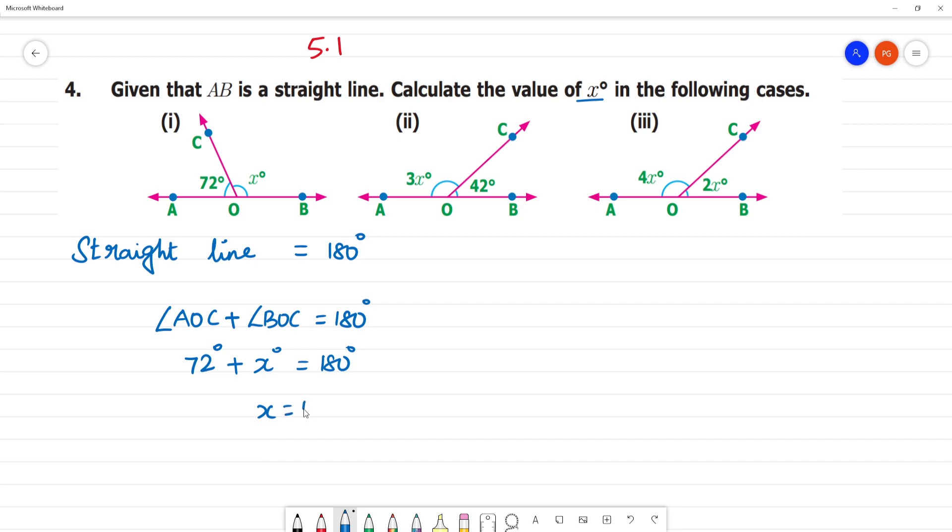X is equal to 180 minus 72. So 180 minus 72, cancel 10, 10 minus 2 is 8, 17 minus 7 is 10. So x degree is equal to 108 degrees. That's the first sum.